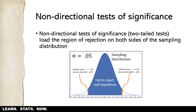If you look at a sampling distribution with alpha equaling 0.05, you'll notice that there's one region of rejection on the left side and one region of rejection on the right side. The amount of area in the region of rejection on the left is 0.025 and on the right it's 0.025, so it's evenly split between the two sides. That means the critical value for rejecting the null hypothesis on the left is a z-score smaller than negative 1.96, and on the right is a z-score larger than positive 1.96. That's a non-directional or two-tailed test.